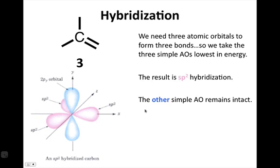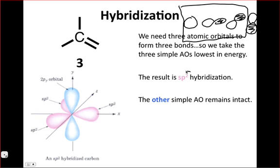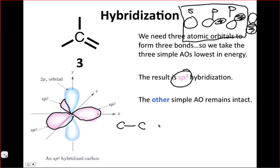We need three hybrid orbitals. In order to get three hybrid orbitals, we hybridize three of the simple atomic orbitals. When we do that, we have sp2 hybridization - we used one s and two p orbitals to form the three pink hybrids shown here. These are considered atomic orbitals, so we combine them with other hybrids to make sigma and sigma star orbitals.